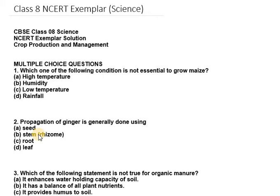Maize belongs to the group of crops of subtropical origin and is highly reactive towards high temperature. This variety of crop is susceptible to low temperatures and does not adjust to such temperatures, due to which cultivation in temperate latitudes is limited. Therefore, the right option is low temperature.